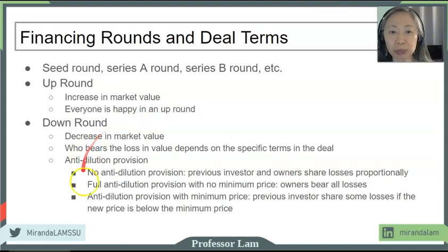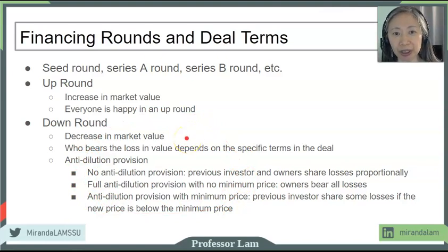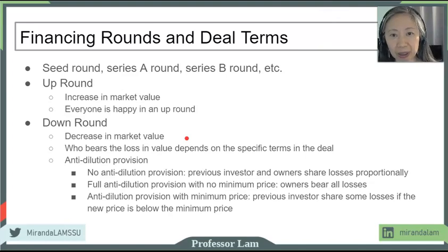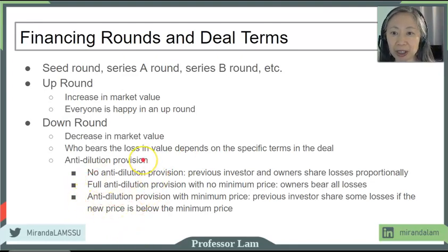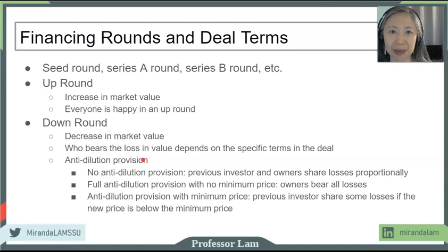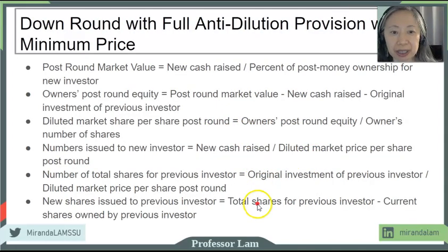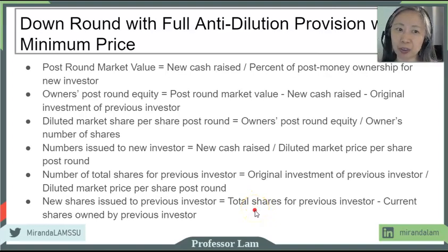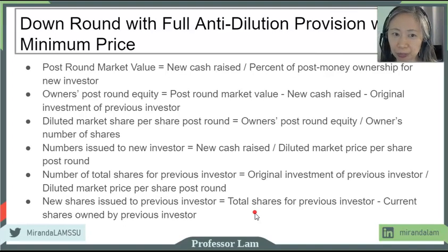So all these are important negotiations. Going back to what we were talking about earlier, the negotiation focused on the amount of control, the share of future benefit, and the amount of money raised today. We add a new dimension — risk. Who is taking the most risk? Here is a summary of the steps and the equations associated with computing the price for a down round when you have full anti-dilution provision.